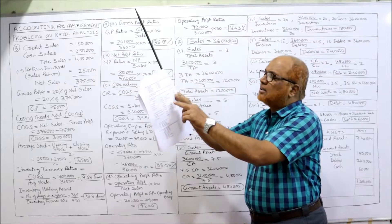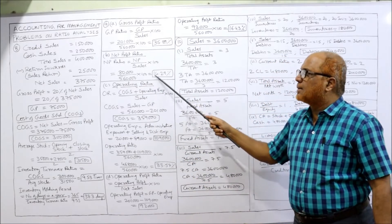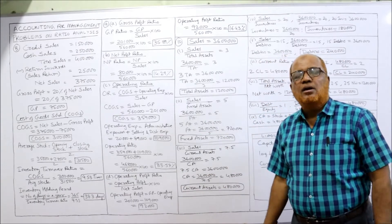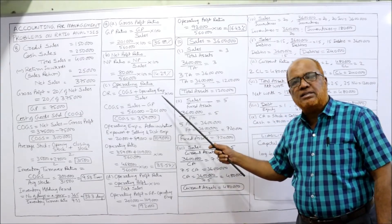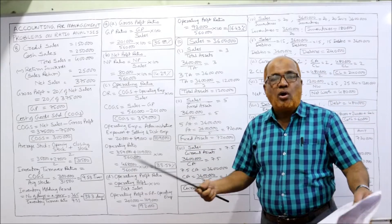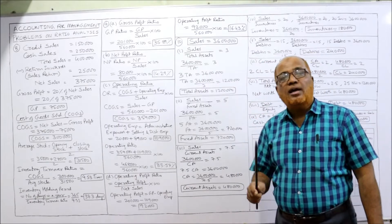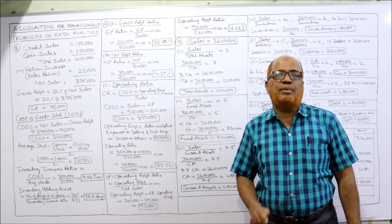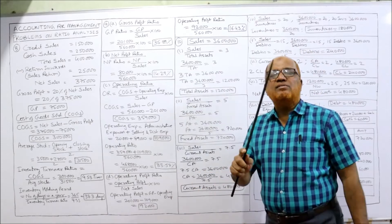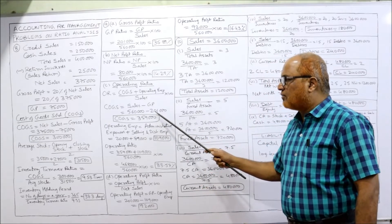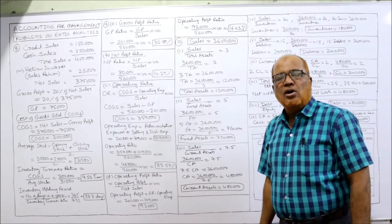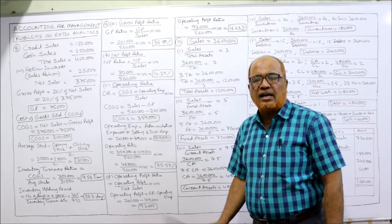Net profit ratio: formula is net profit divided by net sales into 100. Net profit is 80,000. So 80,000 divided by 5,60,000 into 100 equals 14.29%. Third, operating ratio: formula is cost of goods sold plus operating expenses divided by net sales into 100. Cost of goods sold is not directly given — COGS equals sales minus gross profit = 5,60,000 minus 2,01,000 = 3,59,000.